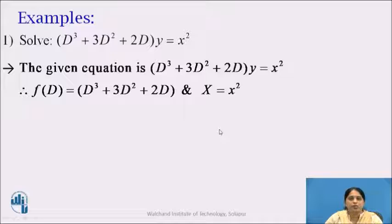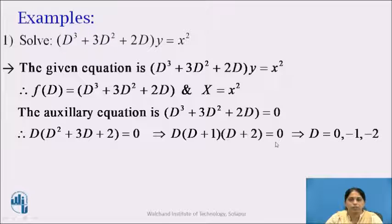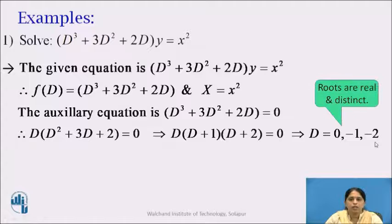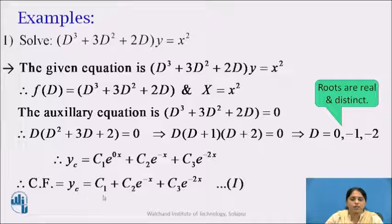First we will find the complementary function. The auxiliary equation is D³ + 3D² + 2D = 0. Taking D as common: D(D² + 3D + 2) = 0, which factorizes as D(D + 1)(D + 2) = 0. Therefore D = 0, -1, -2. Since the roots are real and distinct, yc = c₁e^(0x) + c₂e^(-x) + c₃e^(-2x) = c₁ + c₂e^(-x) + c₃e^(-2x). We call this equation 1.